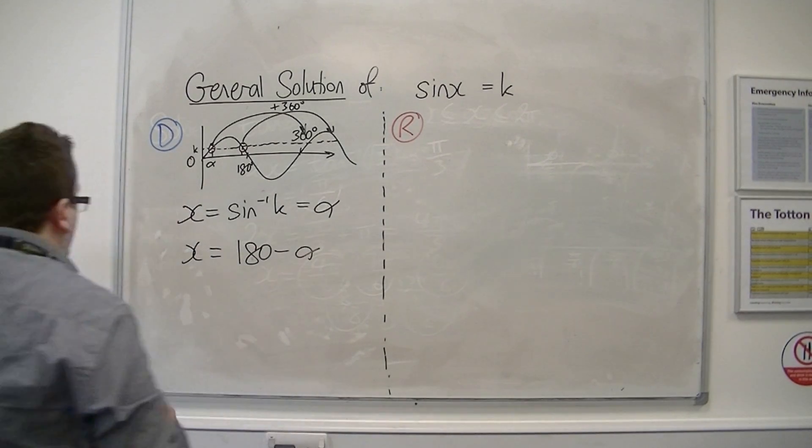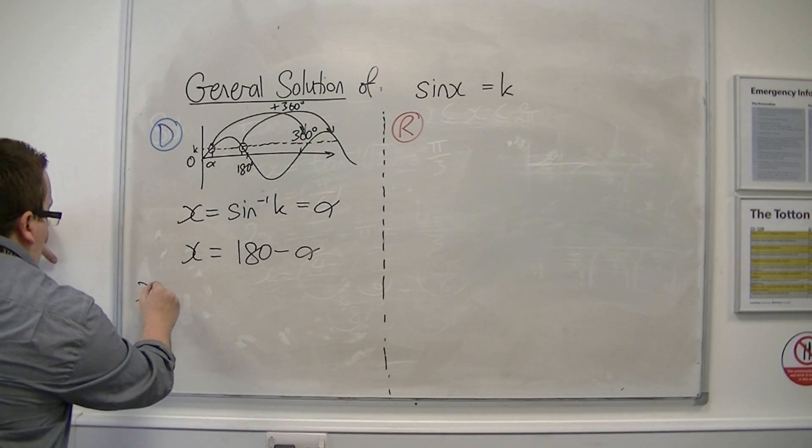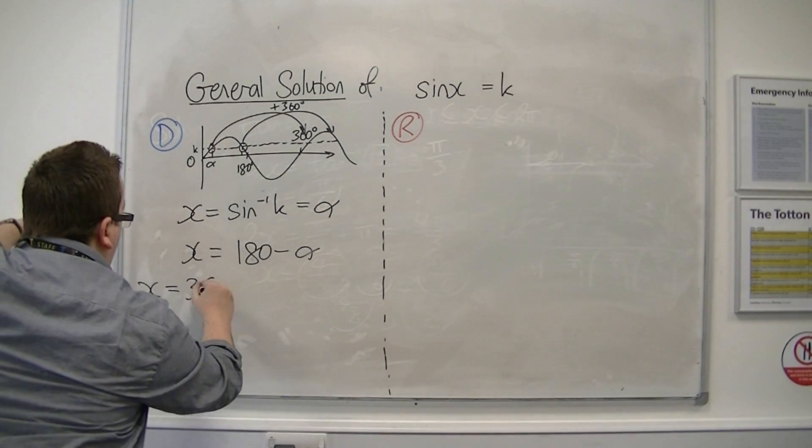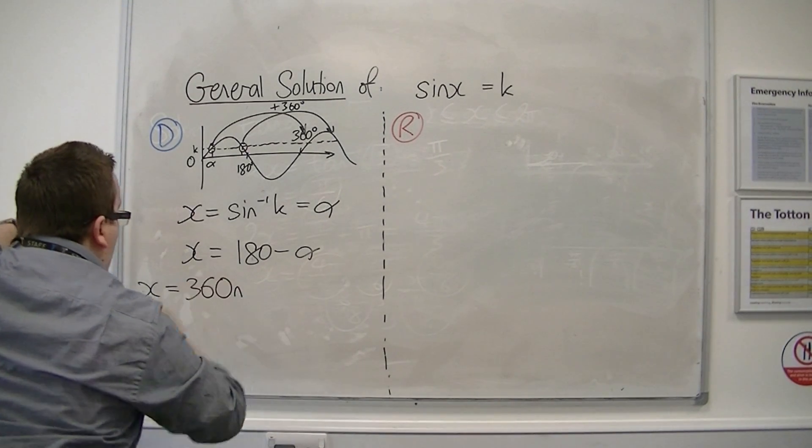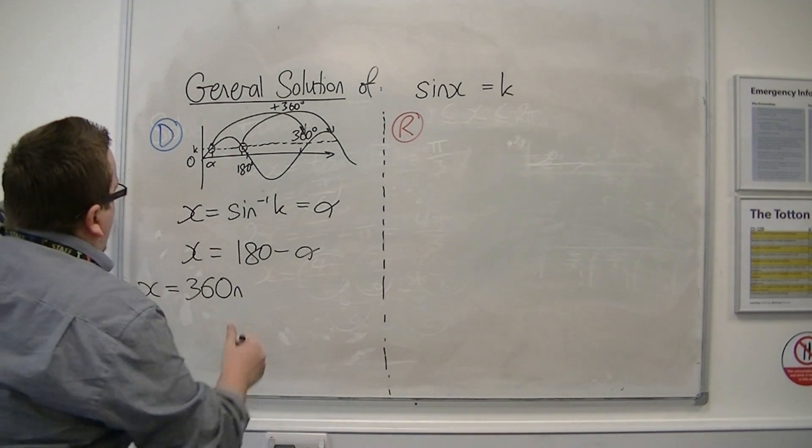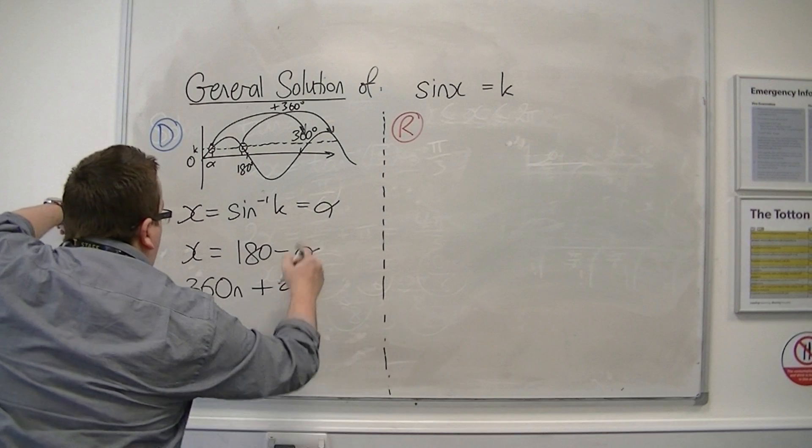And so we can say that x in general will be 360 times n for some value of n. n could be 1, 2, 3, minus 5, minus 7, whatever—so an integer—plus that value of alpha.